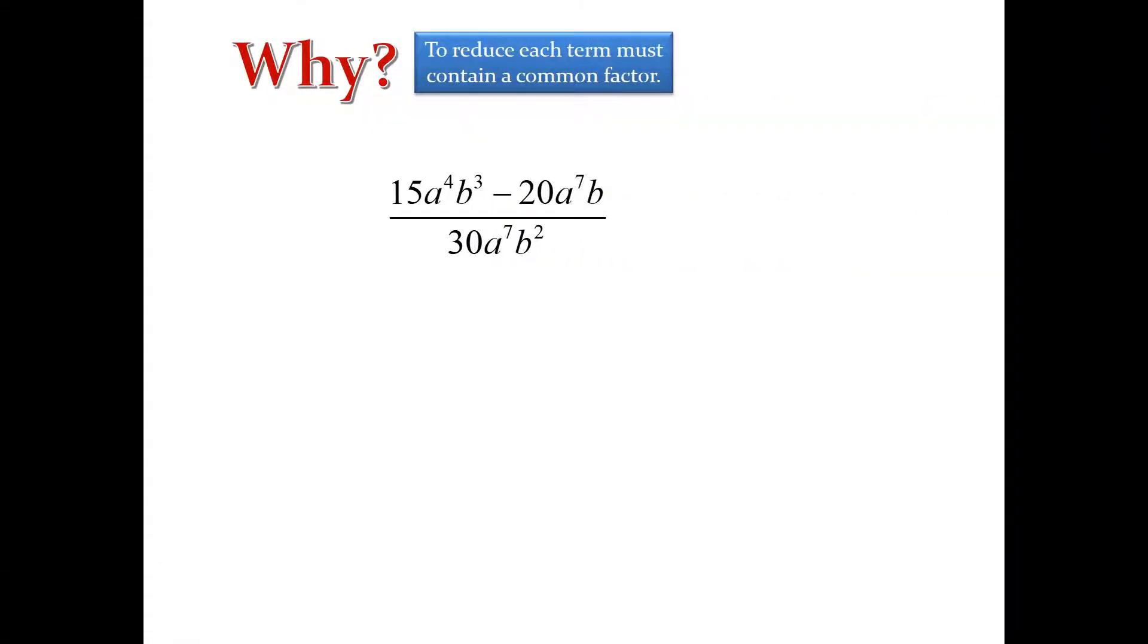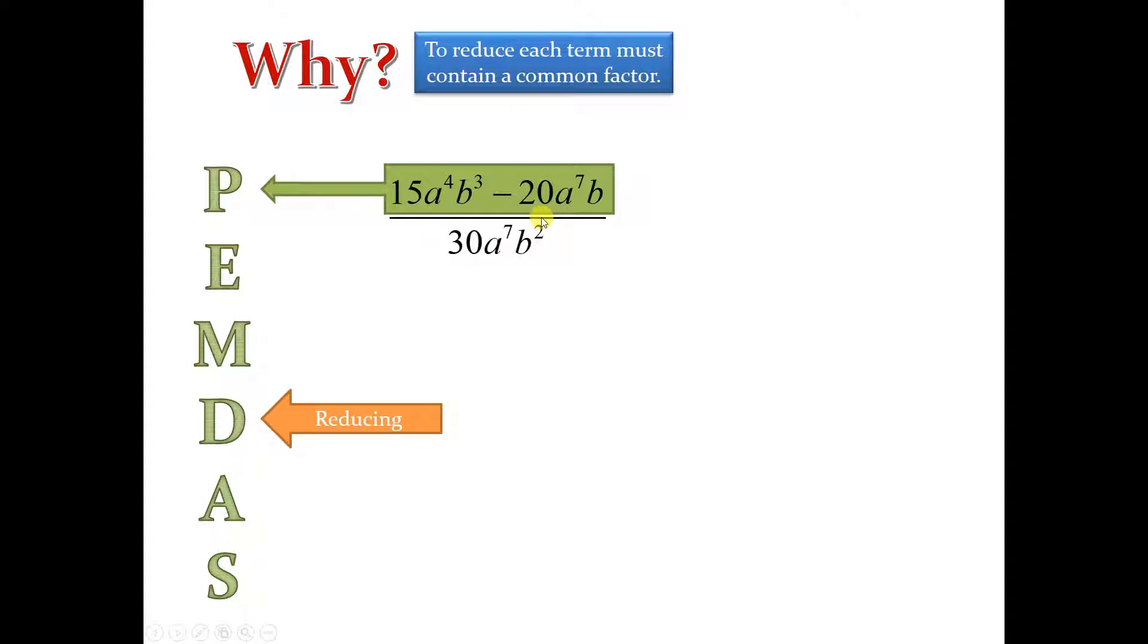Question is, though, why can you reduce like that? I mean, when I think about order of operations, parentheses go way before everything else. And I don't see parentheses, but this is a group. That's a group right there. And I have to take care of operations for groups before I could do reducing, which is division.